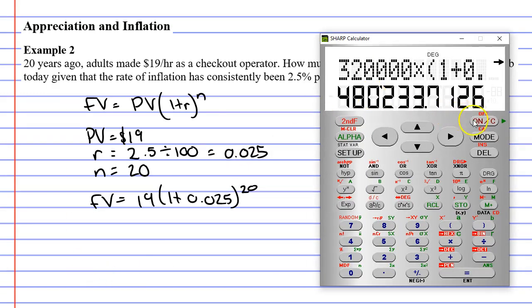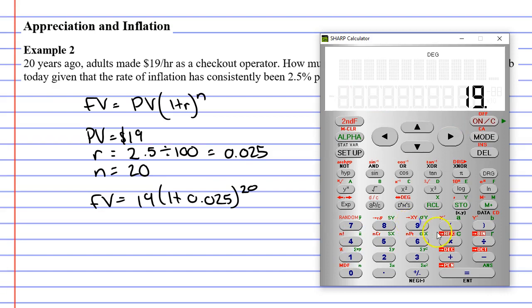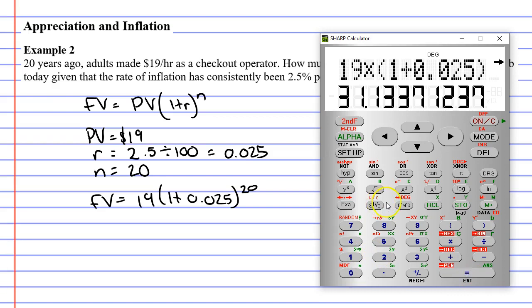Let's bring up our calculator: 19 times bracket 1 plus 0.025, close the bracket, and put this to the power of 20, giving us $31.13.